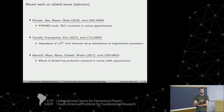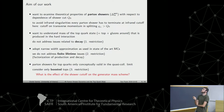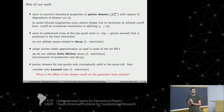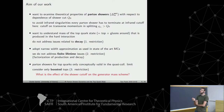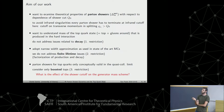We want to examine the properties of parton showers with respect to the dependence on the shower cutoff Q0. Any real parton shower always needs this cutoff to avoid running into singularities. We want to understand the mass of the top quark state produced in hard interactions. Our setup has restrictions: we do not address top quark decay, we adopt the narrow width approximation, and because parton showers are conceptually valid only for boosted top quarks in a quasi-collinear limit, we only look at boosted tops. Then we ask what is the effect of the shower cutoff on the generator mass.